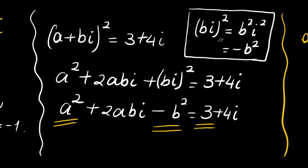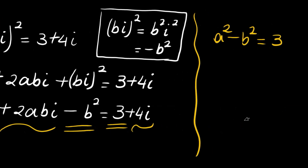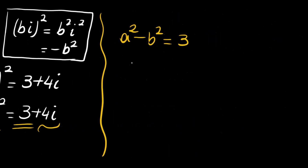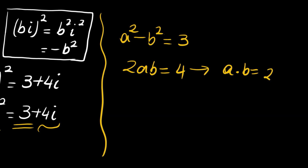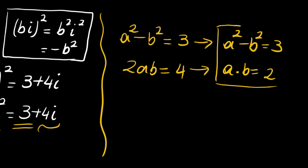The imaginary part gives us 2ab·i equal to 4i, so 2ab equals 4, or a times b equals 2. Combined with a squared minus b squared equals 3, we have a system of two equations in two variables.